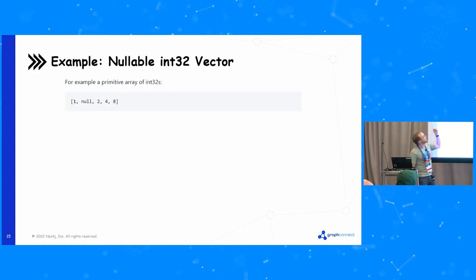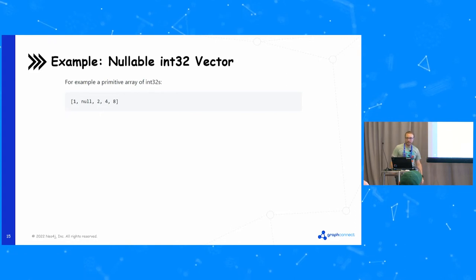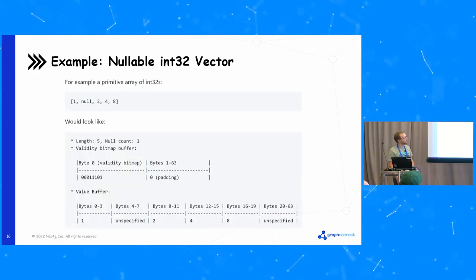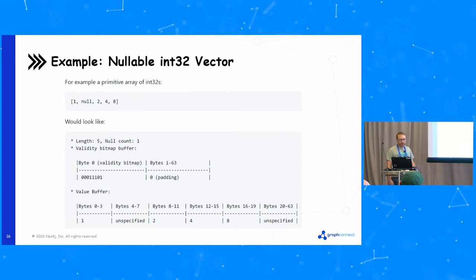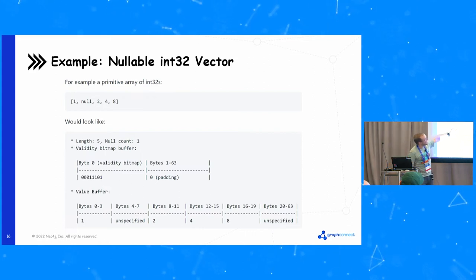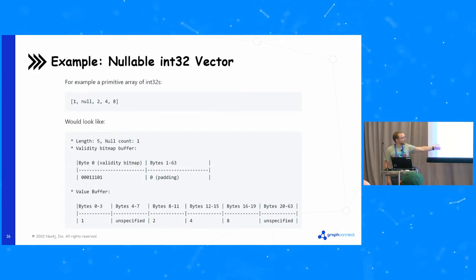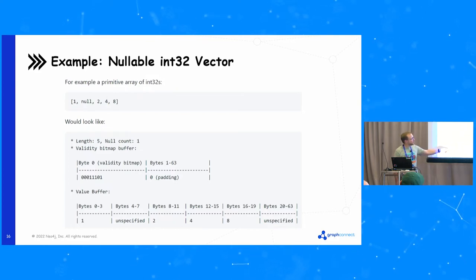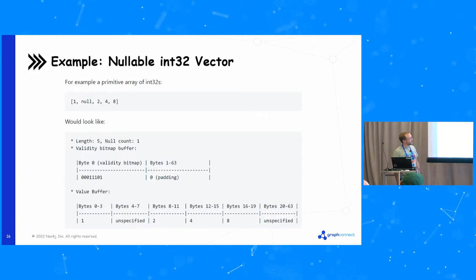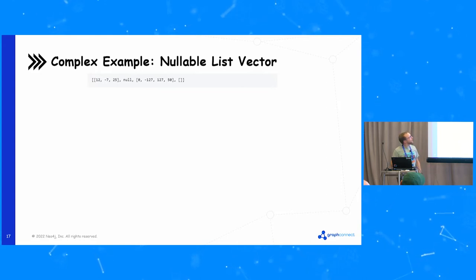If you wanted to take just a single array of nullable 32-bit integers — you have one, null, two, four, and eight — the way it ends up represented in Arrow under the covers is two different buffers. You've got your validity bitmap that says which values in the vector are populated — which ones are null versus not null — and then the actual values themselves in the value buffer. You can very quickly and efficiently understand where the gaps are in some of the datasets.